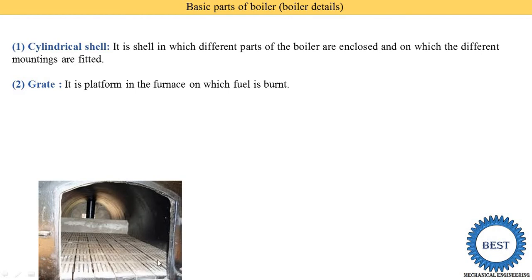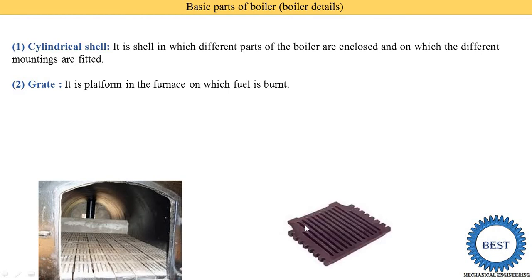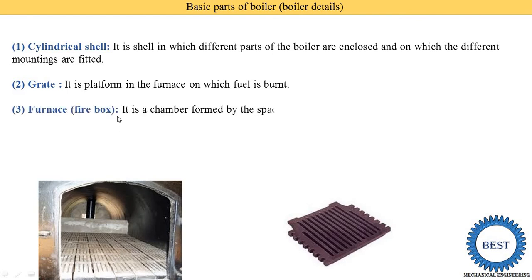In the grate, various openings are provided. After combustion, the ash particles fall down through these openings, and fresh air also comes in from the bottom part of the grate. So from below, air is supplied to the fuel for proper combustion, and the final residue that remains is known as ash. This is the grate. The next part is the furnace.